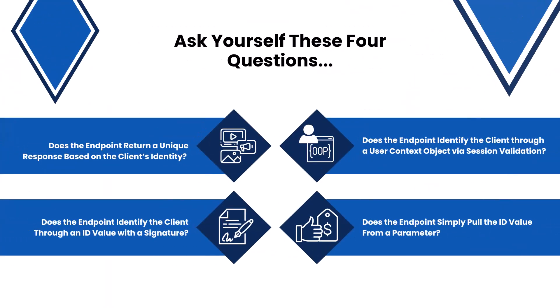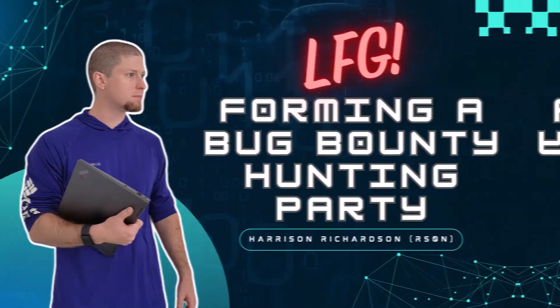Those are the four questions to ask yourself when testing for IDORs: Does the endpoint return the same response regardless of the client's identity? Does the endpoint identify the client by establishing a user context? Does the endpoint identify the client through an ID value with a signature? Or best case, does the endpoint simply pull an ID value from a parameter? The closer you get to the bottom of the list, the easier it will be to find an IDOR. I've got another video coming soon with a very exciting DEF CON announcement, so please keep an eye out for that. Best of luck — happy hunting!